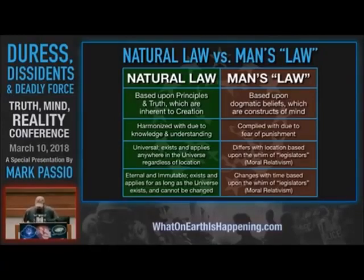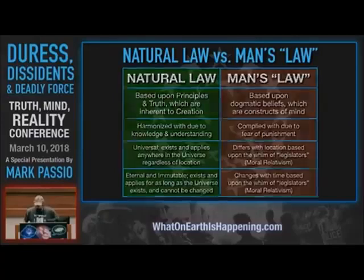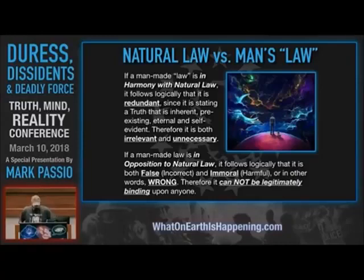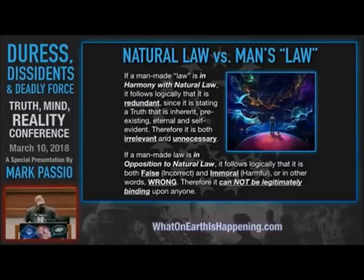Natural law is eternal and immutable. It exists and applies for as long as the universe exists, and it cannot ever be changed by any action that any being within the universe can do. Man's law, on the other hand, changes with time based upon the whim of legislators, which is also moral relativism. If a man-made law is in harmony with natural law, it follows logically that it is redundant, since it is stating a truth that is inherent, pre-existing, eternal, and self-evident. Therefore, man's law is both irrelevant and unnecessary. If a man-made law is in opposition to natural law, it follows logically that it is both false and immoral — it results in harm to other beings. Therefore, man's law that is in opposition to natural law can never be legitimately binding upon anyone.